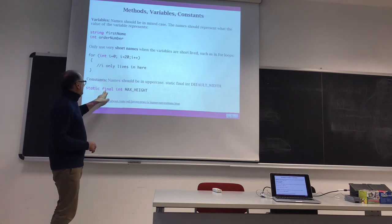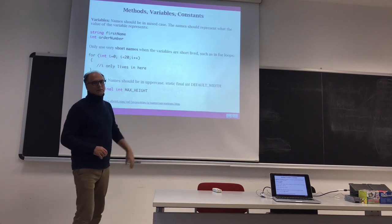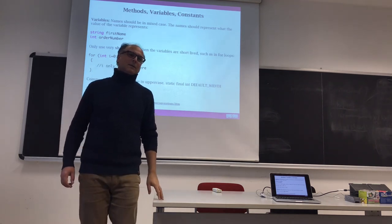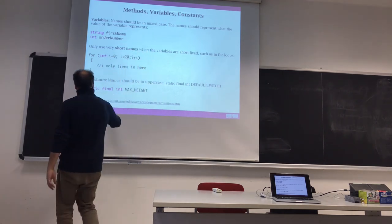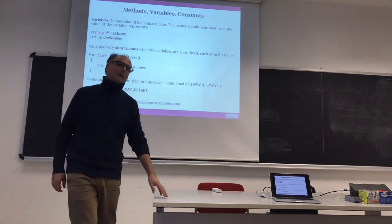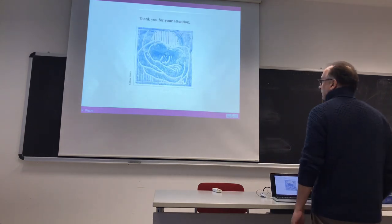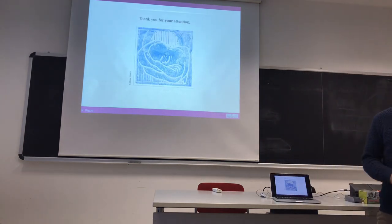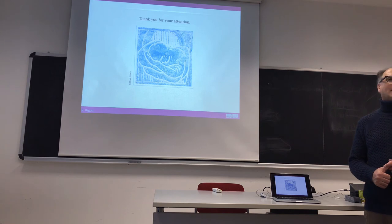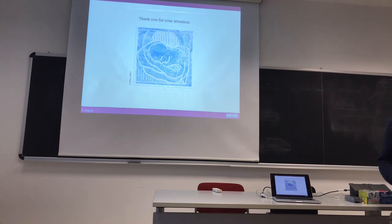Now, regarding `final`: the declaration of `final` marks a variable as constant — a constant by definition because there is a `final` modifier. A final modifier establishes it as a constant. Now we know how to document code and how to name things. You have a lot of space to follow these conventions.